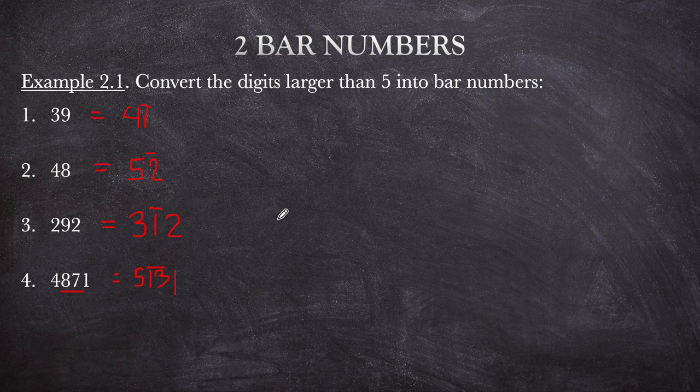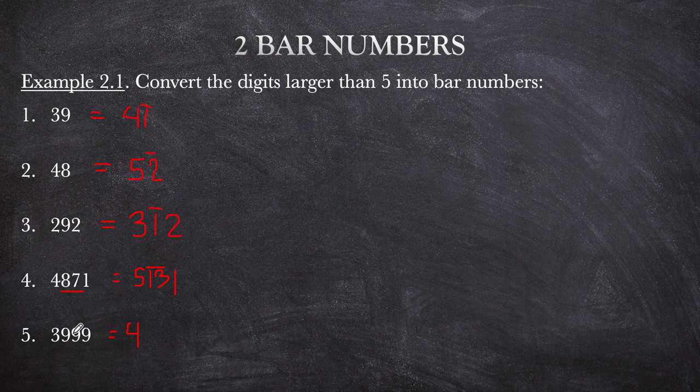For 3,999: you might be tempted to say 3 bar 1111, but take note — it's 'all from 9 and the last from 10.' We add 1 to 3, giving 4. What do you add to 9 to make it 9? It's already 9, so it becomes bar 0. Continuing: bar 0, and then bar 1 for the last digit. So the result is 4 bar 0, 0, 1.